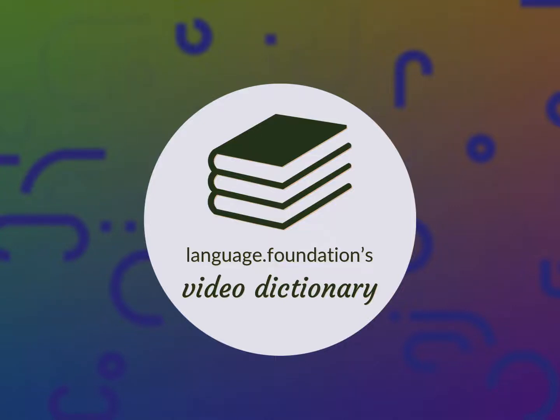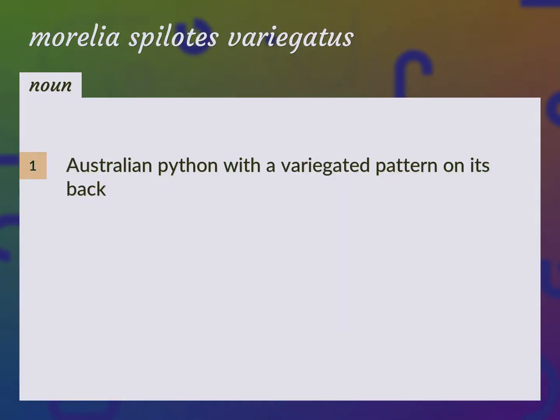Language.Foundation's Video Dictionary, helping you achieve understanding. Australian Python with a variegated pattern on its back. Carpet Snake, Python Varia Goddess.